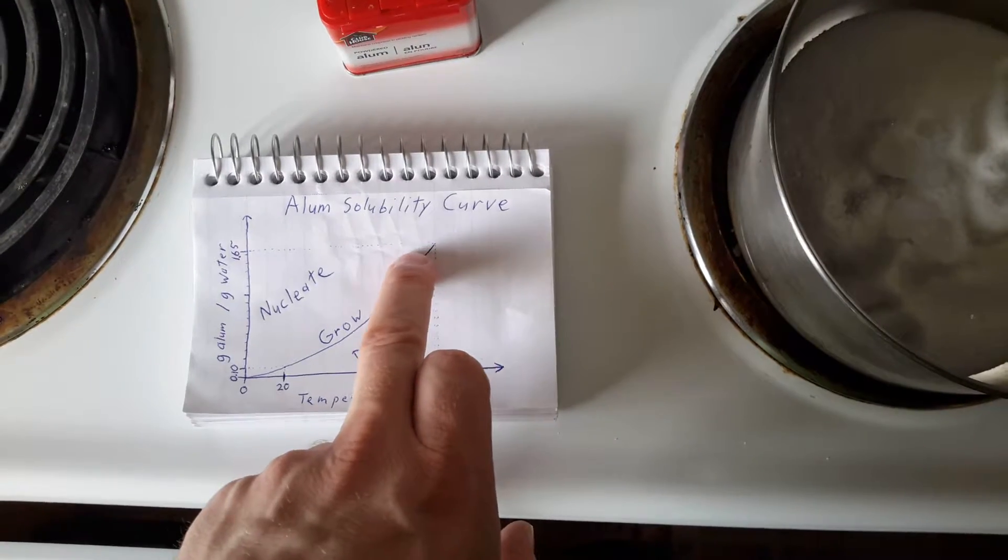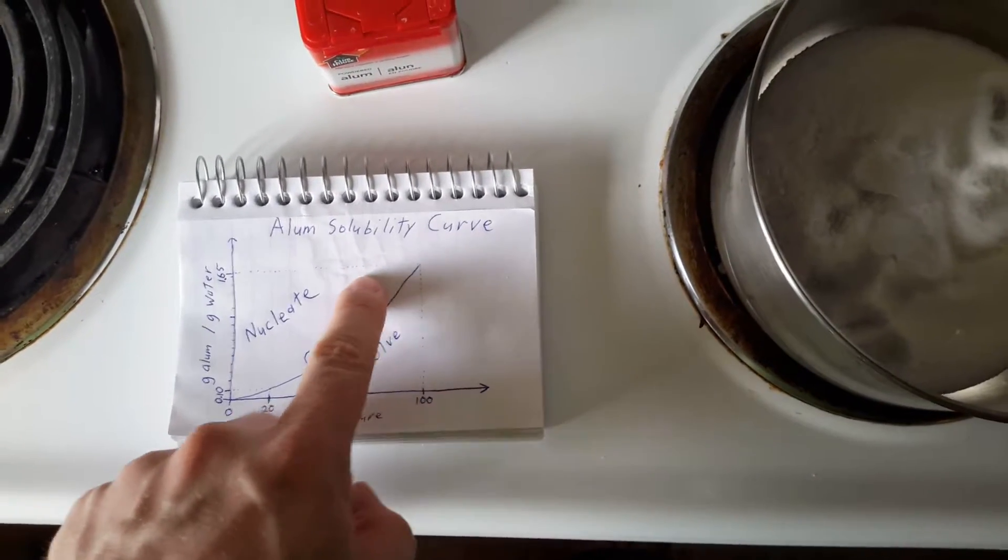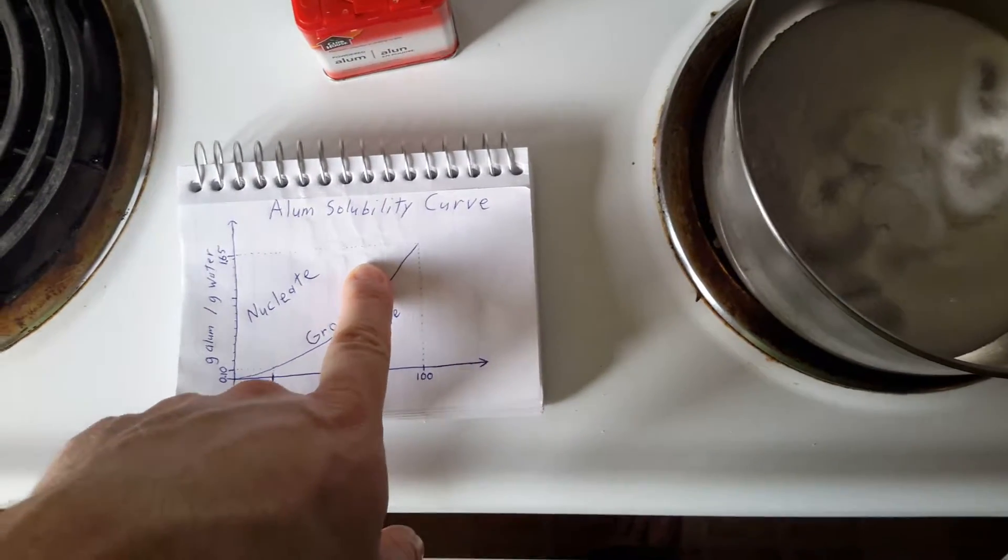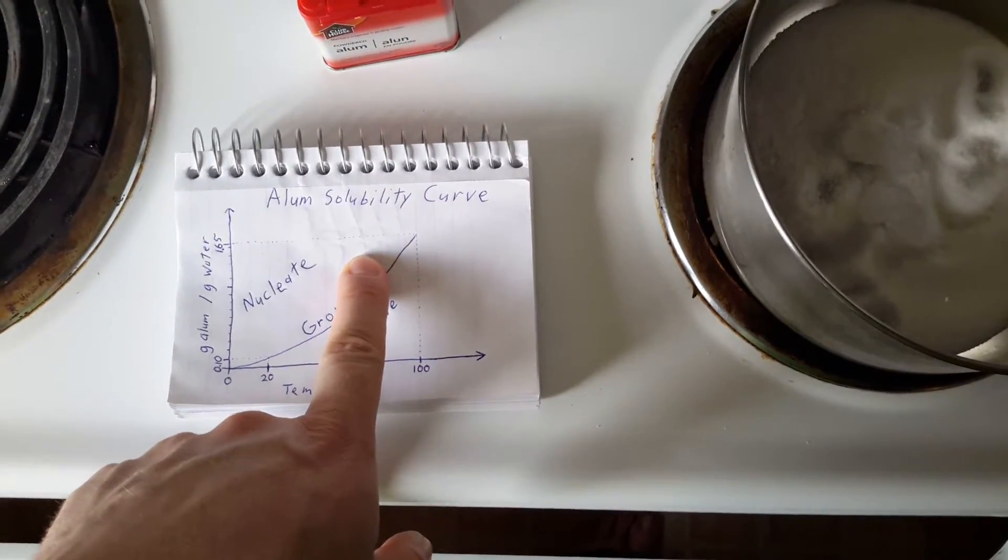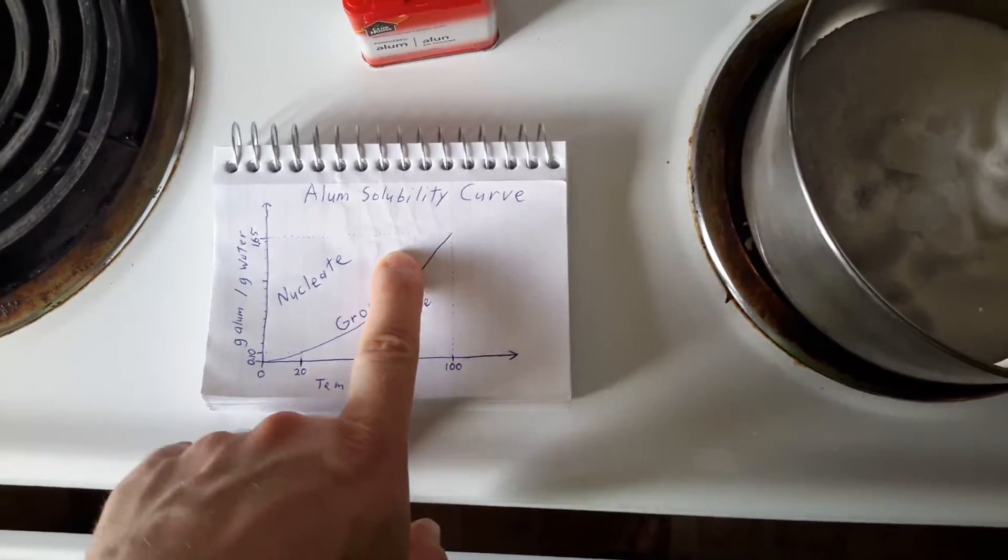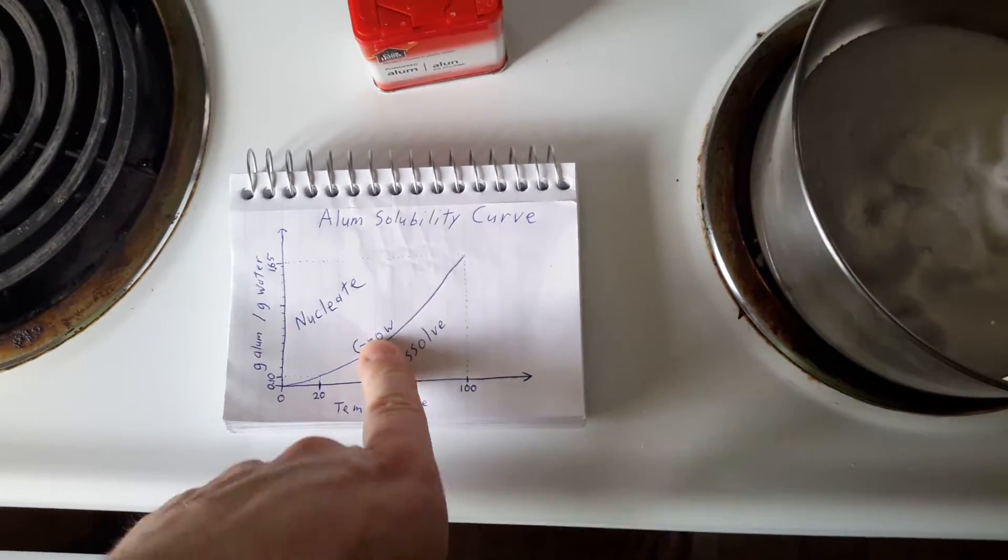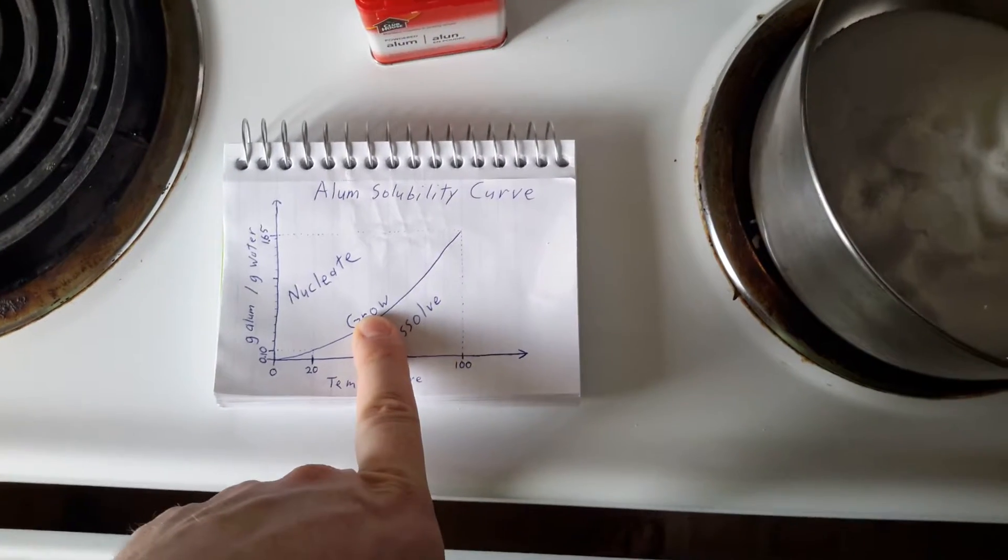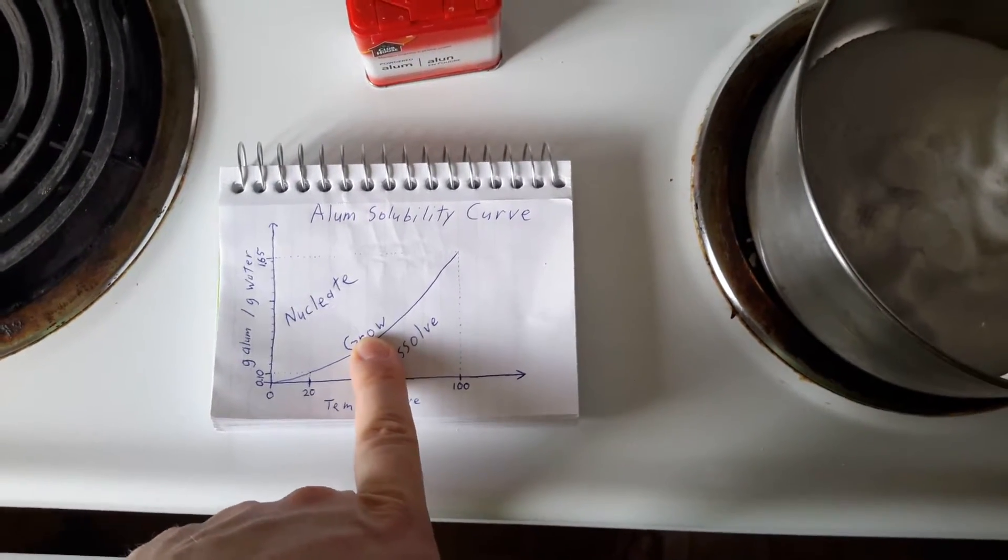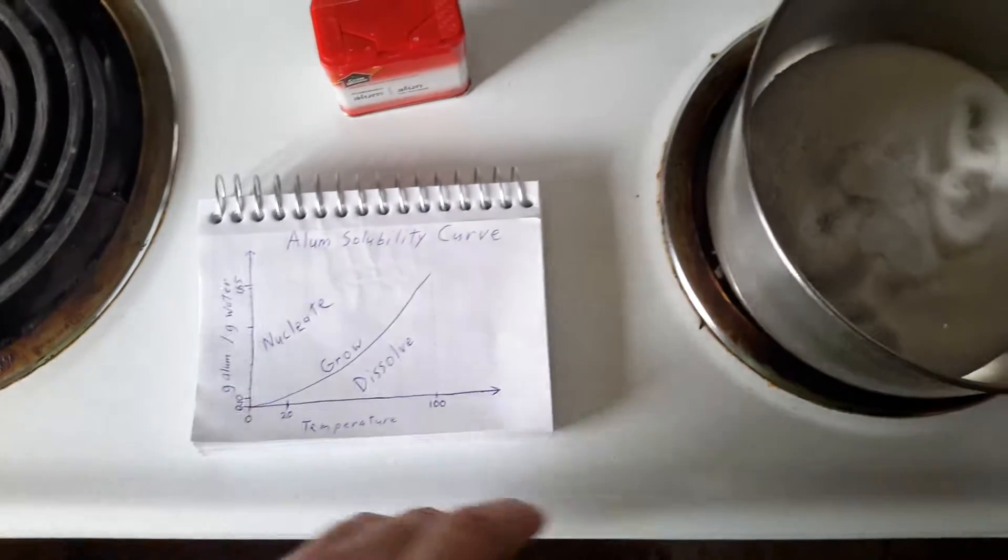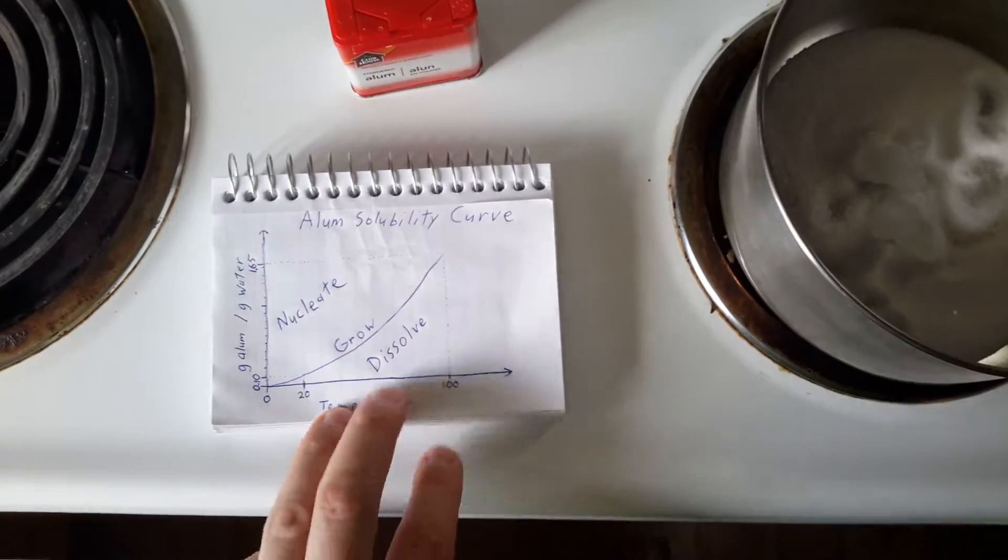And then I'm going to let the temperature drop, and when the temperature drops, the solubility is going to drop, and this alum is going to have to precipitate out of the solution with crystal nucleation and rapid crystal growth. Now because of the rapid crystal growth, these are going to be terrible crystals, but it's not actually the crystals that I want. Those crystals I'll set aside and recycle them.